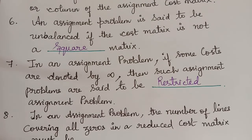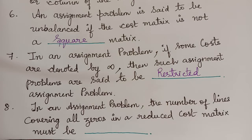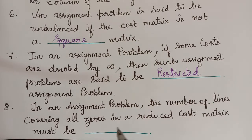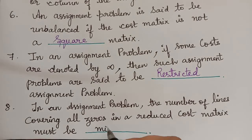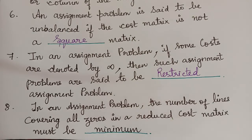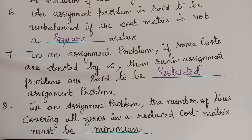In an assignment problem, the number of lines covering all zeros in a reduced cost matrix must be minimum. After row reduction and column reduction, if we cannot assign zeros directly, we draw lines to cover all zeros. The number of such lines must always be minimum. If the order of the matrix is n, we can draw at most n minimum lines to attain the optimal solution.